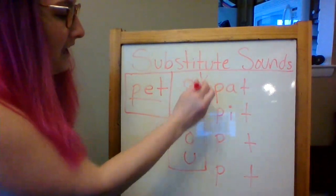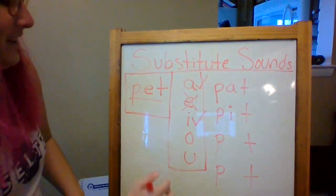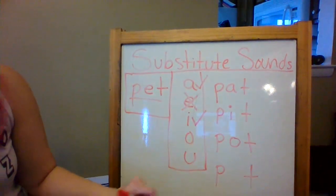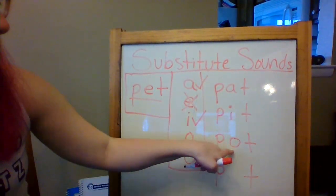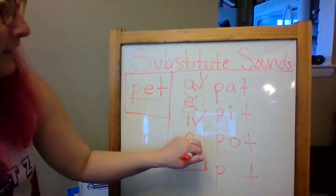So we've done A. We've done I. Our next one is O. Ready? Put O in the middle. We're substituting O. P-o-t. Pot. Pot. Very good.